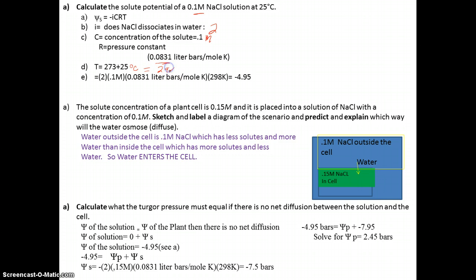That gives you 298 Kelvin. Then you just plug and chug, and you multiply all this. Notice when you multiply, it's a negative number—don't forget that. You get negative 4.95 bars. This is the unit.